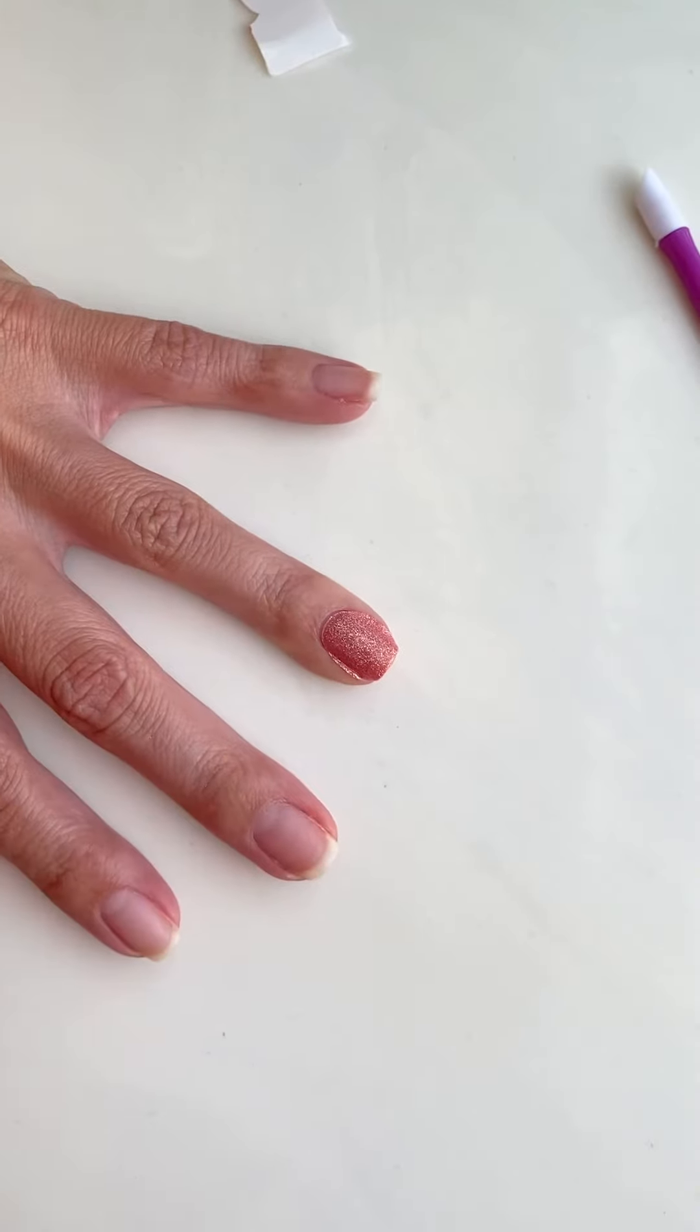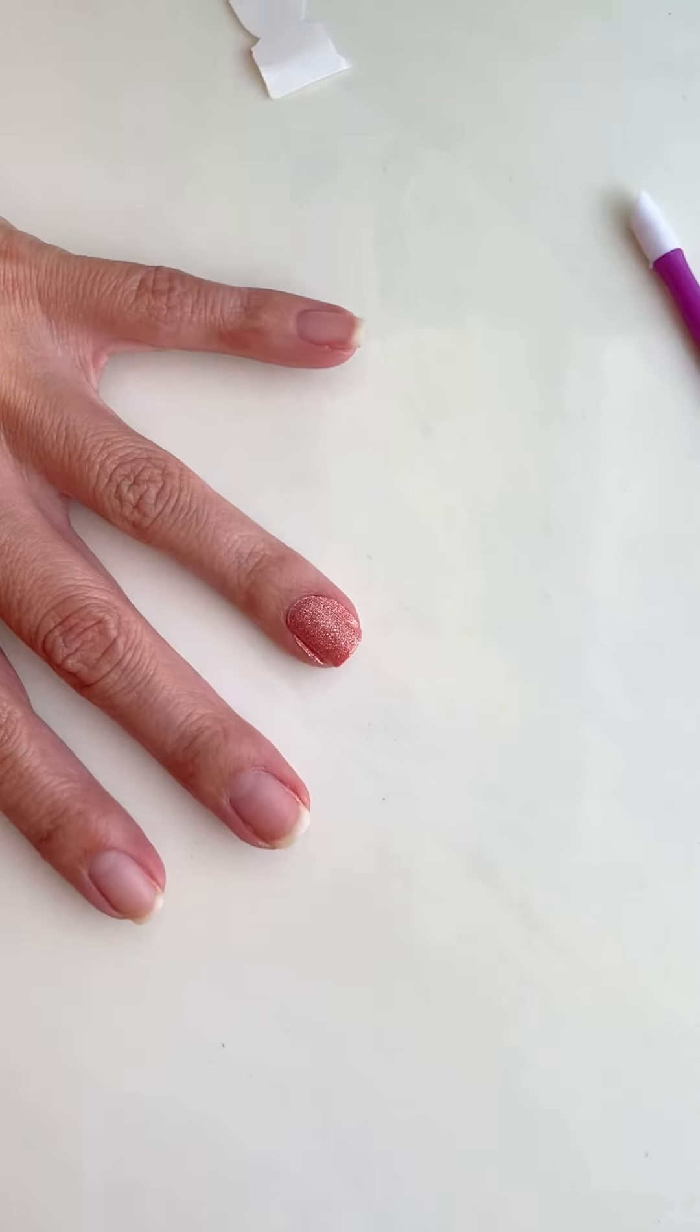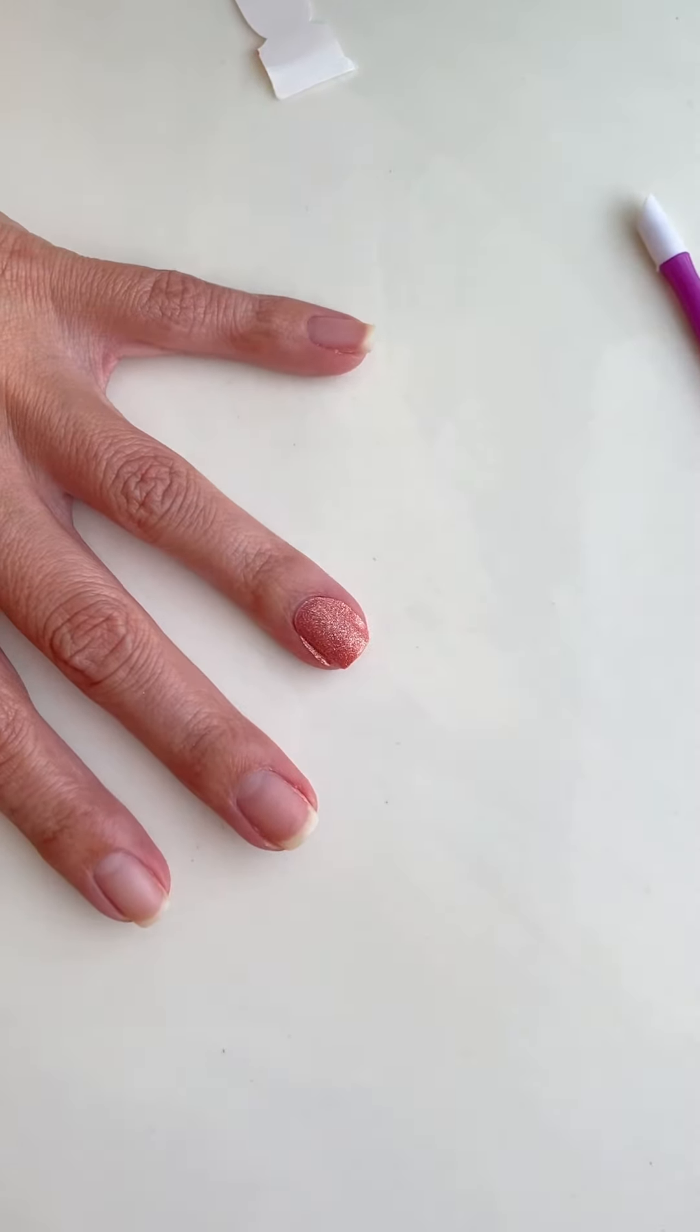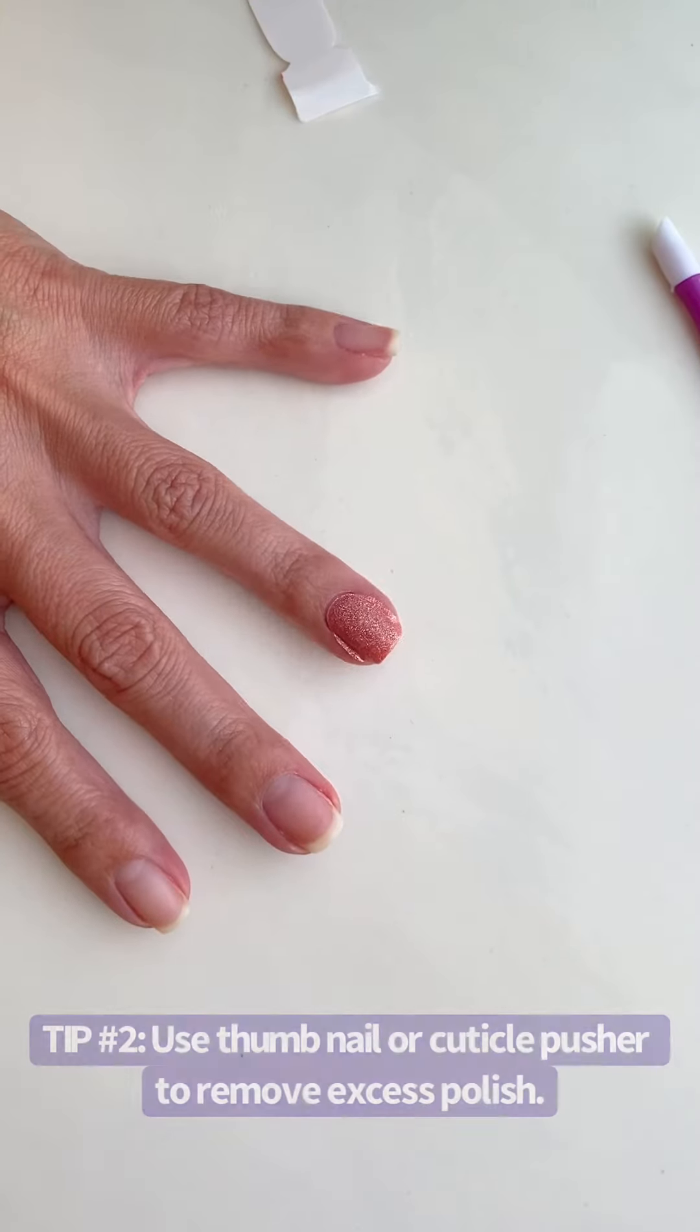Notice how on both sides there's excess. It is not supposed to look like that, right? We want it to look clean and nice and neat. So there's a few things that you can do. One, you can simply just use your thumb.